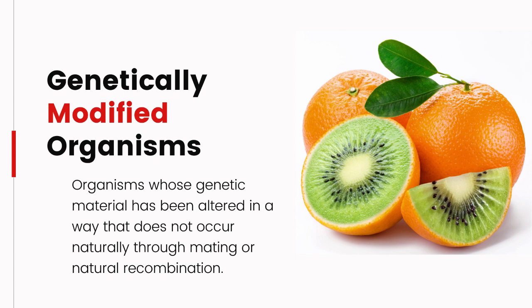GMOs can be found in various forms, including plants, animals, and microorganisms. Common GMOs include genetically modified crops such as corn, soybeans, and cotton, genetically engineered livestock, and genetically modified bacteria used in pharmaceuticals or industrial processes.